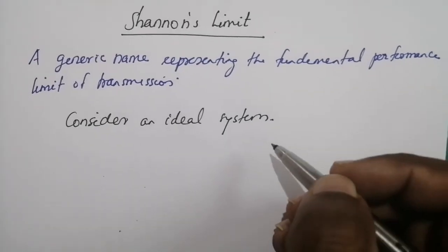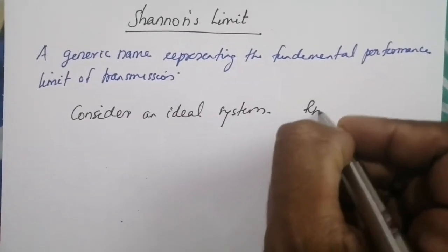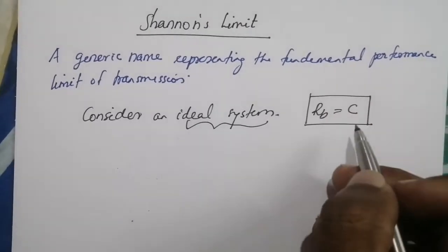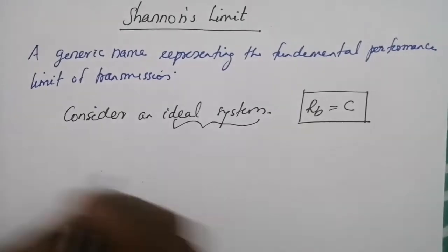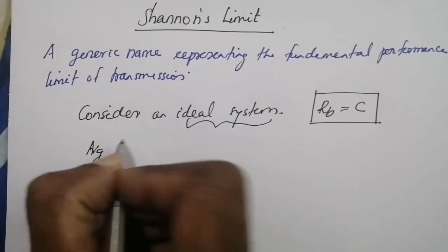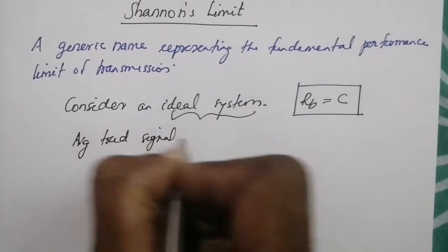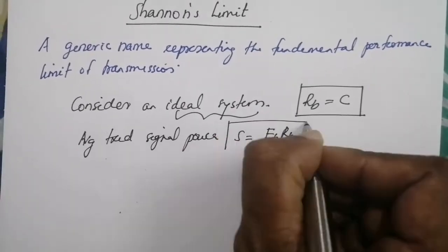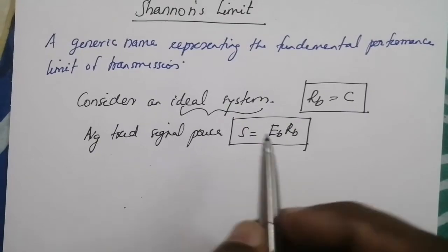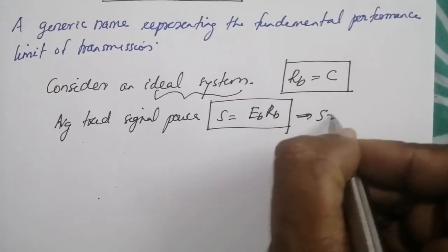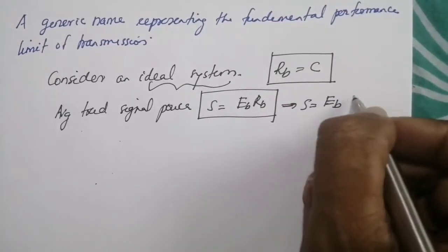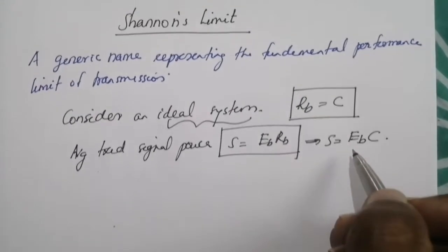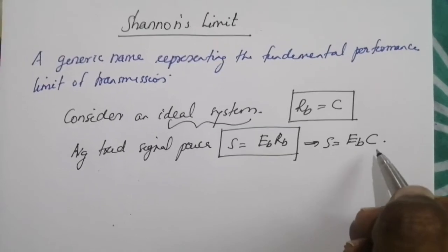Consider an ideal system — one in which the rate of transmission Rb is equal to C, the channel capacity. We know that the average transmitted signal power S is equal to Eb times Rb. Since the system is ideal and Rb equals C, this can be written as S equal to Eb·C, where Eb is the transmitted energy per bit and C is the channel capacity.